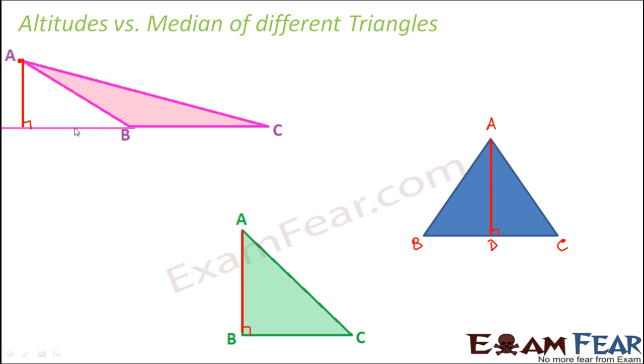So in this case what do we see? We see that the altitude for an obtuse triangle lies outside the triangle. So here we can say that altitude lies outside the triangle.